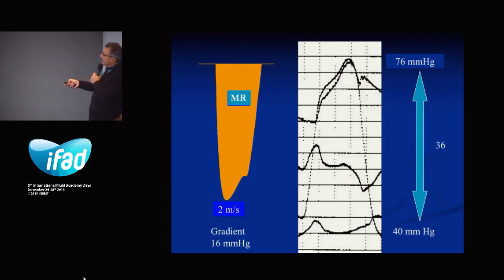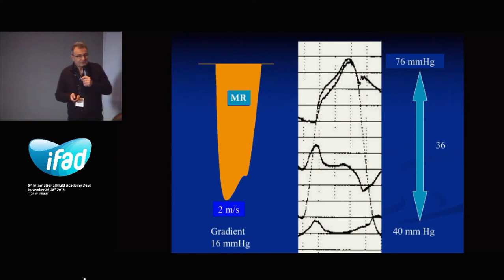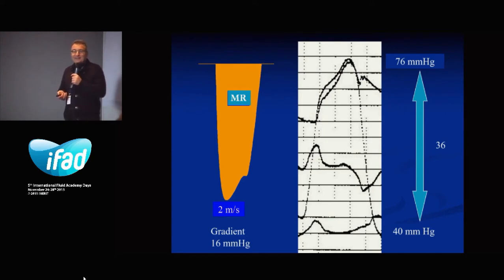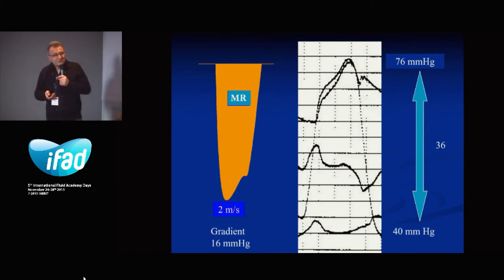From left ventricle to left atrium, the pressure gradient is 36 millimeters of mercury. But my resident recorded only 16 mmHg from this flow. Why? The angle between the probe and the flow — he underestimated the velocity of the flow due to the probe angle.